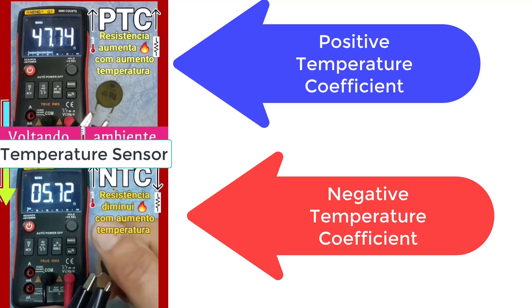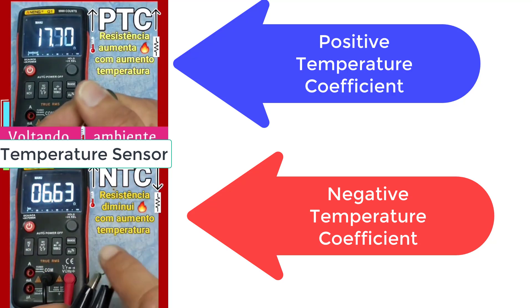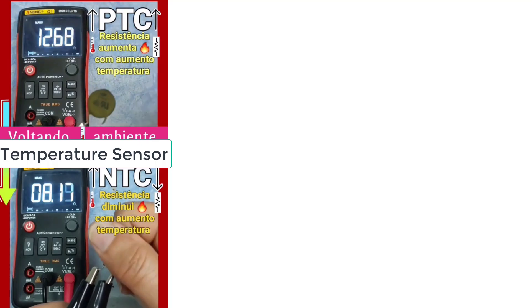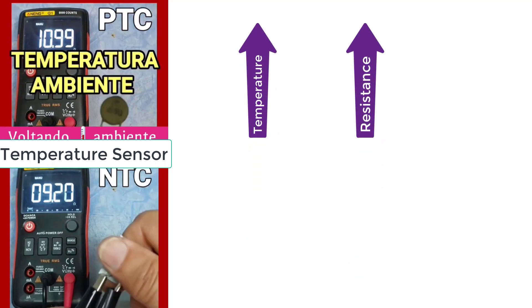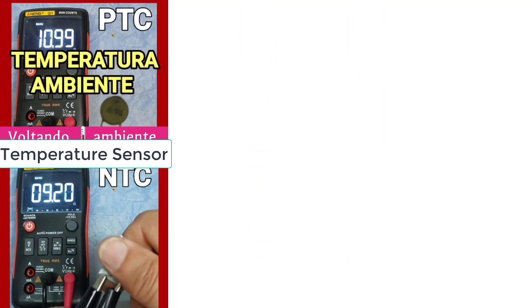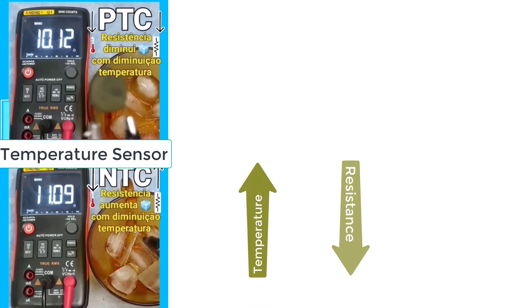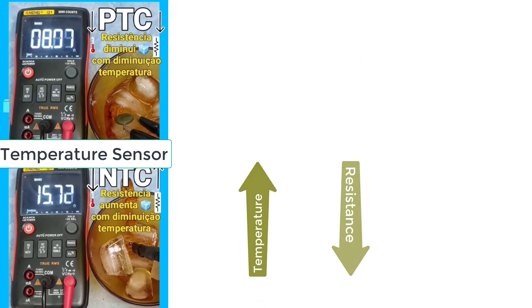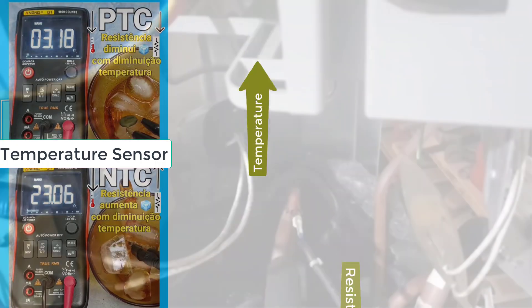What is the difference between the two? PTC works as follows: as the temperature increases, the resistance value also increases. In the case of NTC, it is the opposite — as the temperature increases, the resistance of the component decreases. This is the basic difference.